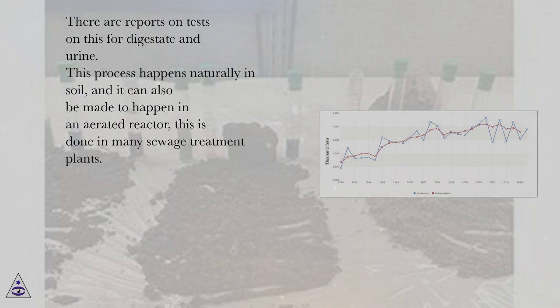There are reports on tests on this for digestate and urine. This process happens naturally in soil, and it can also be made to happen in an aerated reactor. This is done in many sewage treatment plants.